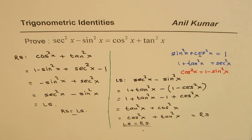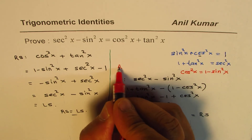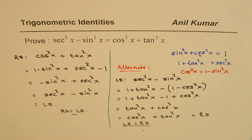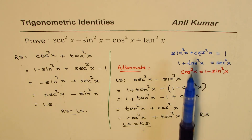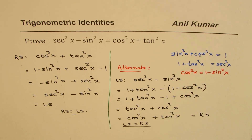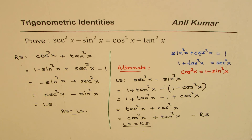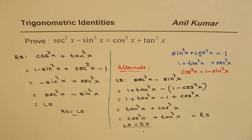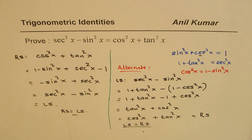So you have proven that left side equals to right side, and that's the alternate method to do it. Either way you could start and prove this identity. The important thing is that these two Pythagorean trigonometric identities can be utilized to prove this particular identity. I'm Anil Kumar, and I hope that helps you understand these strategies which could be adopted to solve such questions. Thank you and all the best.